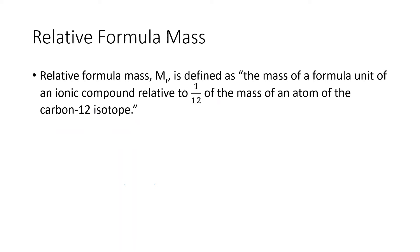Now relative formula mass is the same thing — it's also MR. The only difference is the wording. Instead of relative molecular mass, we call it relative formula mass, and we use this term for ionic compounds. Ionic compounds generally consist of a metal and a non-metal. For a compound that consists of a metal and a non-metal, we use the term formula mass and not molecular mass. It has something to do with bonding, but we won't go into the details of that.